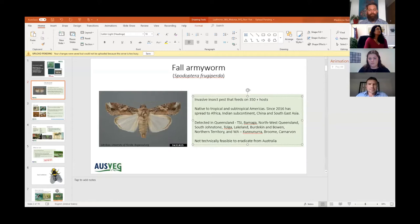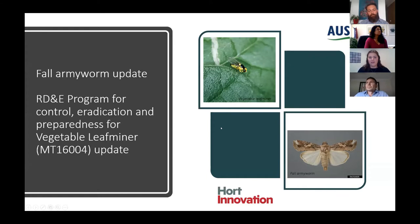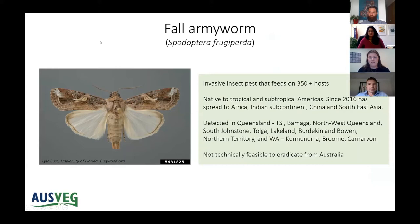Today I'll be talking about fall armyworm and then giving an update on a Hort Innovation funded project that I'm working on for vegetable leaf miner. Fall armyworm is an invasive insect pest that feeds on more than 350 recorded host crops. It's native to the tropical and subtropical regions of the Americas and has since been found in Africa, India, China and Southeast Asia.